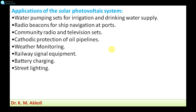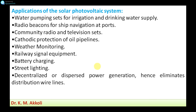Street lighting is another important application. Independent street lights are set up such that during the day they are charged by solar energy, and at night, when sunlight is not available, light sensors detect darkness and the lights turn on automatically. This is how solar street lamps are used.